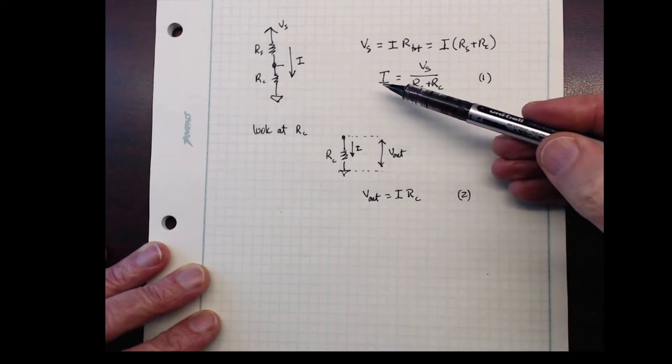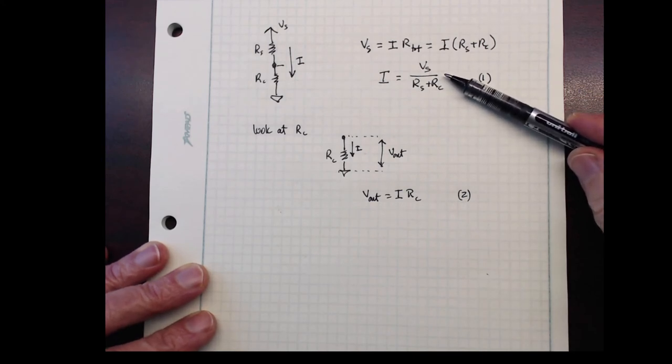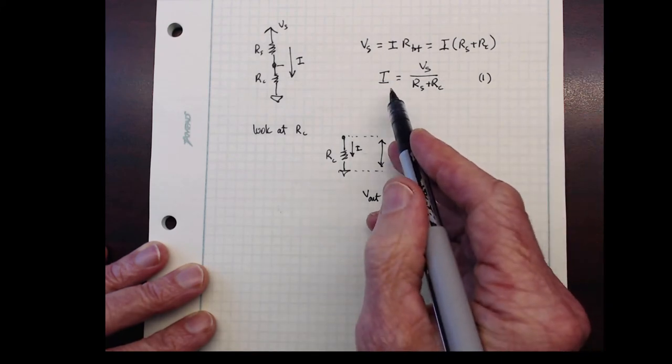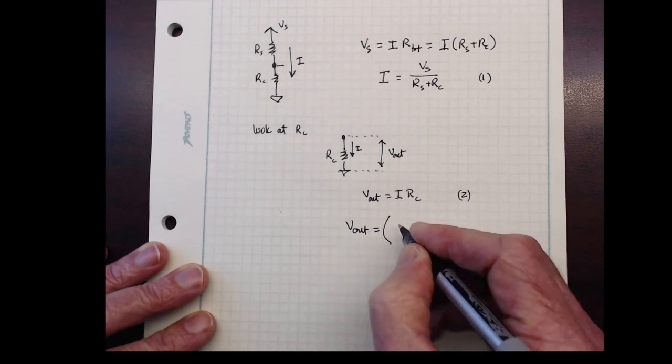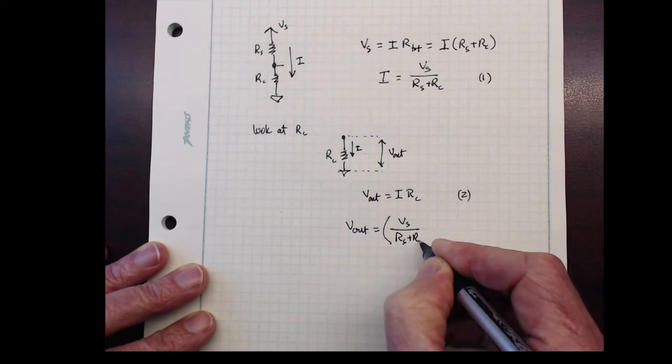Well, I have the I from equation one, and it's in terms of what we know, or at least what we want to be able to control, V sub S, RS, RC. So now I put that I into this formula, V out equals, substituting, V sub S, RS plus RC, times RC.